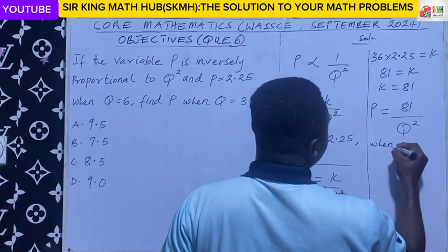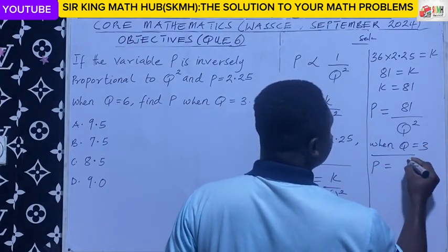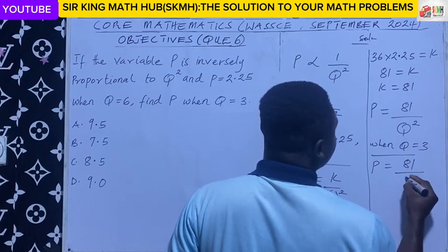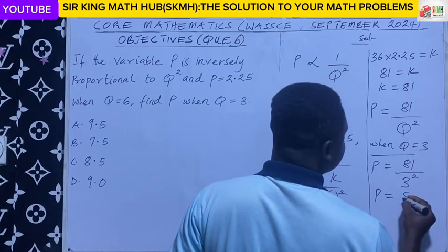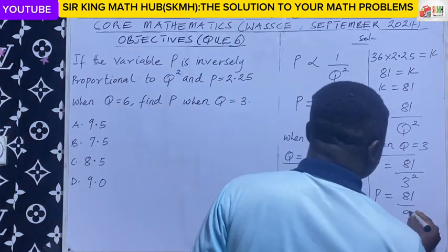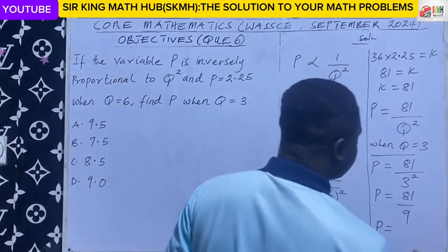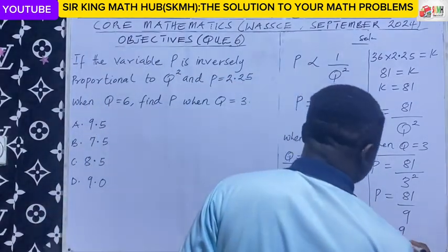So when q is 3, we have p is equal to 81 on 3 squared. 3 squared is 9. So what is p? 81 divided by 9. So that is 9.